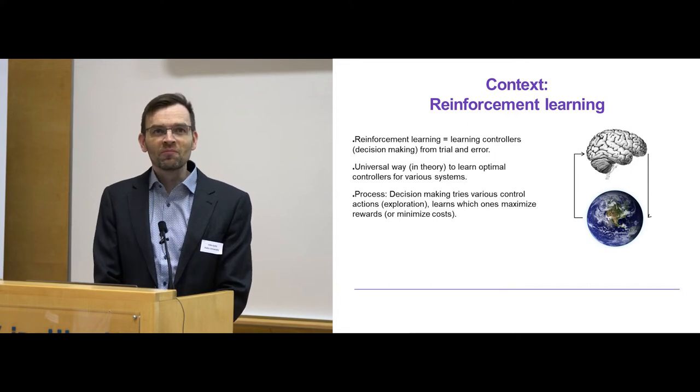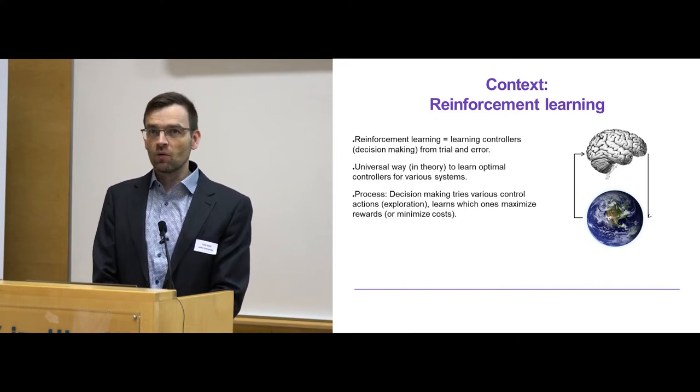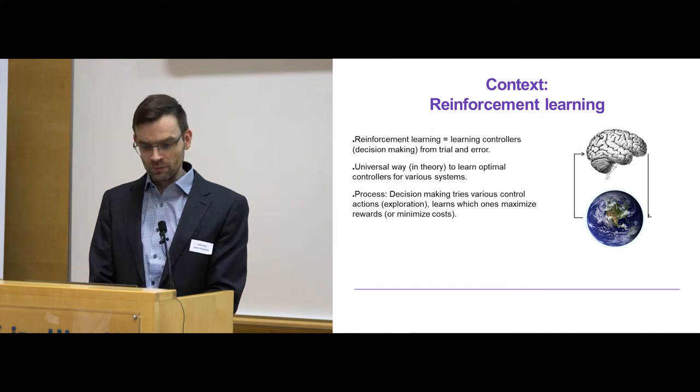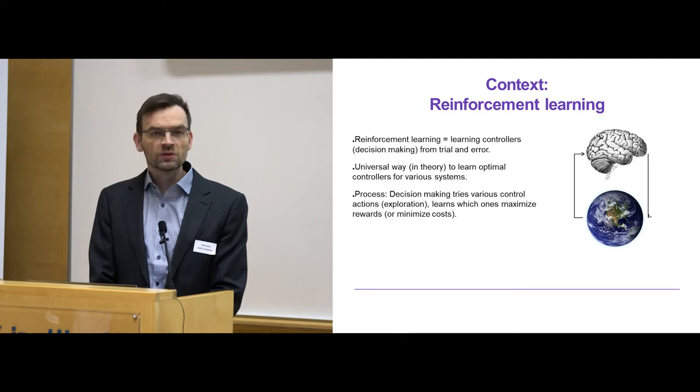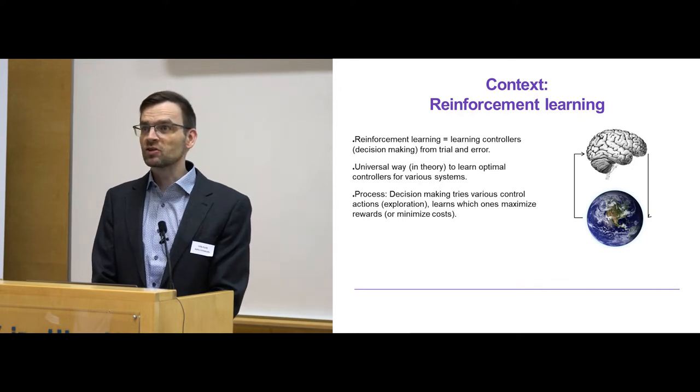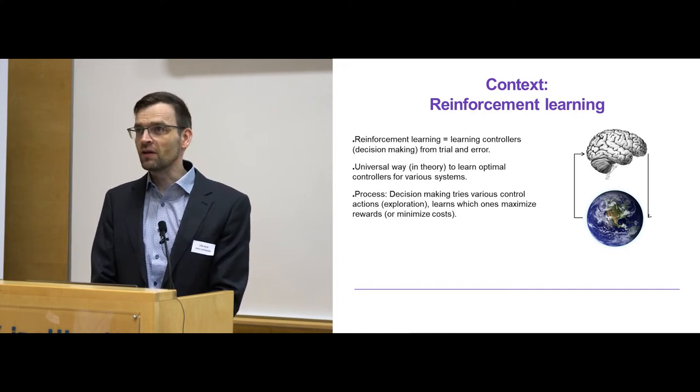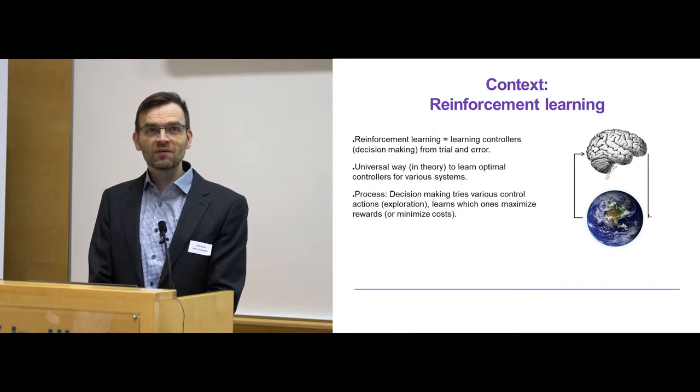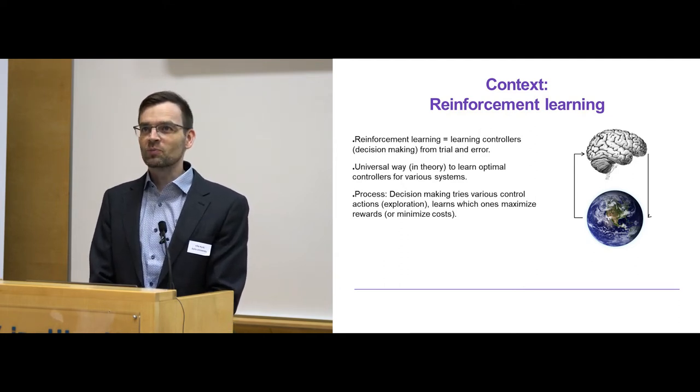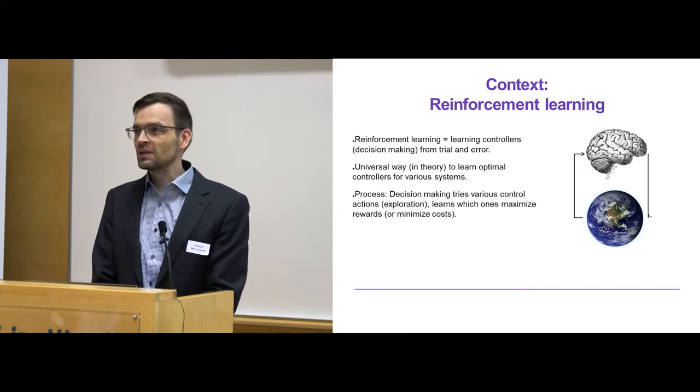Reinforcement learning can be informally defined as learning controllers from trial and error. When I'm talking about controls that doesn't mean only control engineering controls but learning any kind of decision making from trial and error. That's a universal way to learn optimal controls for various systems and works by exploration. The idea is that if we have a model we can test various control strategies and optimize by trying out various strategies in an intelligent way and figuring out which one works best. You don't want to do this exploration in a random fashion because of various problems with random exploration, first it being extremely inefficient and second of all when in the case of physical systems it being extremely dangerous.